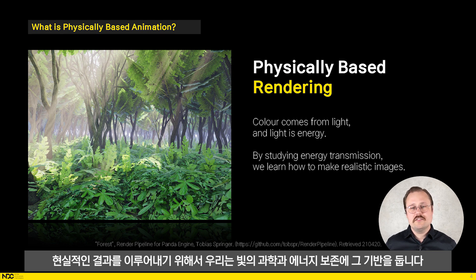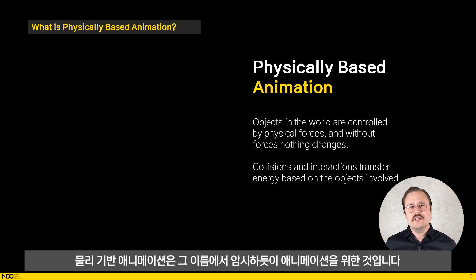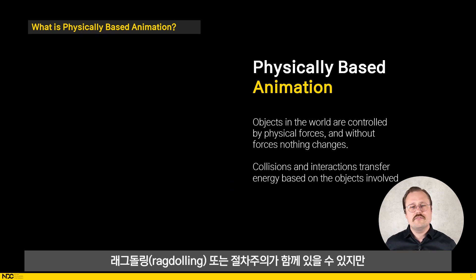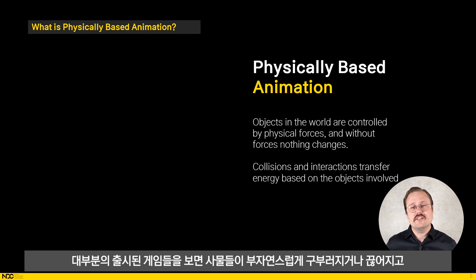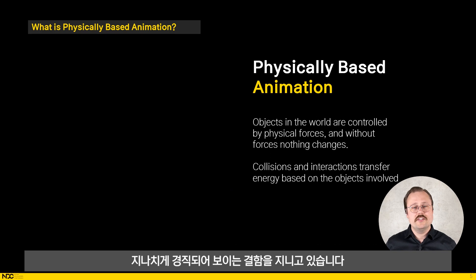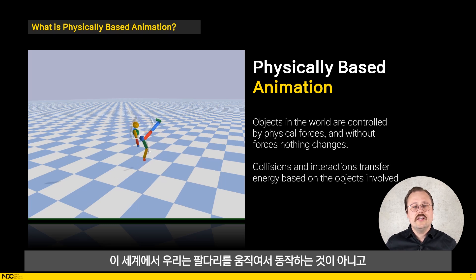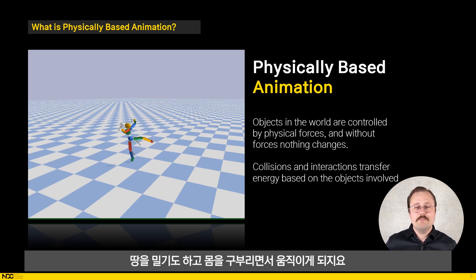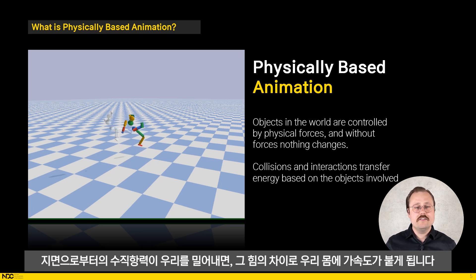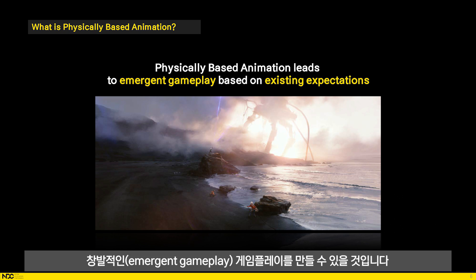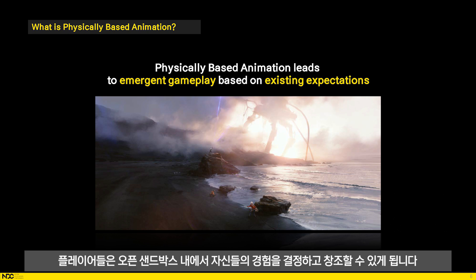We base physically based rendering on the science of light and preservation of energy to achieve realistic results. Physically based animation is that, but as the name implies, for animation. In a classical animation workflow, physical correctness is secondary to what looks and feels good, especially for non-humanoid characters. There might be a splash of ragdolling or proceduralism in the mix, but almost every published game has animation glitches where things bend unnaturally, snap, or just look overly stiff. When we switch to doing physically based animation, we start from the joints, the limbs, and the weights of the bodies and apply forces to move them. In this world view, I don't move by moving my limbs, but by pushing on the ground and angling my body. The normal force of the ground pushes back and the difference causes my body to accelerate.